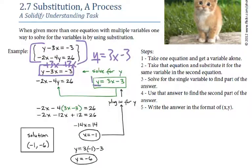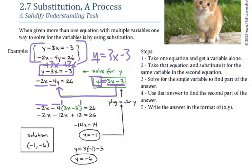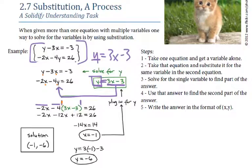We wanted to get one variable all by itself, because when we have one variable by itself, we can take what it's equal to and plug it into our second equation in that variable. So we rewrote that second equation, but instead of the y, we said y is equal to 3x minus 3, meaning they're the same. y and 3x minus 3 are the same — they're twins. So we can swap out the twins. On both of these equations up here, they both have a y and an x. There is no way we can solve that. But by substituting in one variable for another in that relationship, now I've got two x's.